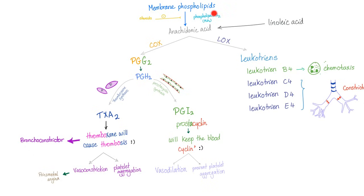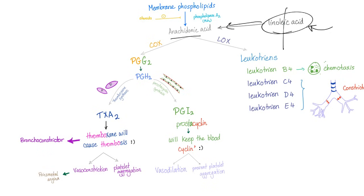Membrane phospholipid to arachidonic acid — thanks to phospholipase A2. Where does arachidonic acid come from? From linoleic acid. That's why arachidonic acid by itself is not an essential fatty acid — it comes from linoleic acid. Your body can synthesize linoleic acid and convert it into arachidonic acid, but when linoleic acid is deficient, arachidonic acid becomes essential.